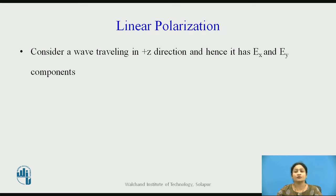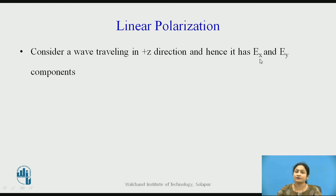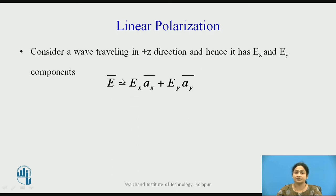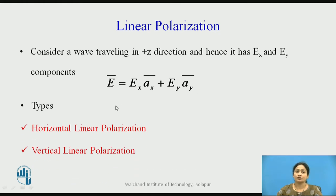In linear polarization, the wave is said to be linearly polarized if the magnitude of the electric field vector is oriented along either the horizontal or vertical direction. Consider a wave traveling in the z direction with electric field components in the x and y directions. The resultant E is given by E = Ex·ax̄ + Ey·āy. Based on this, we define two types: horizontally linear polarization and vertically linear polarization.